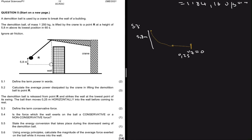5.4 says is the force which the wall exerts on the ball a conservative or a non-conservative force. I already stated for 5.3 that the only conservative forces we have are natural forces. So a force that is exerted by a wall will thus be non-conservative.